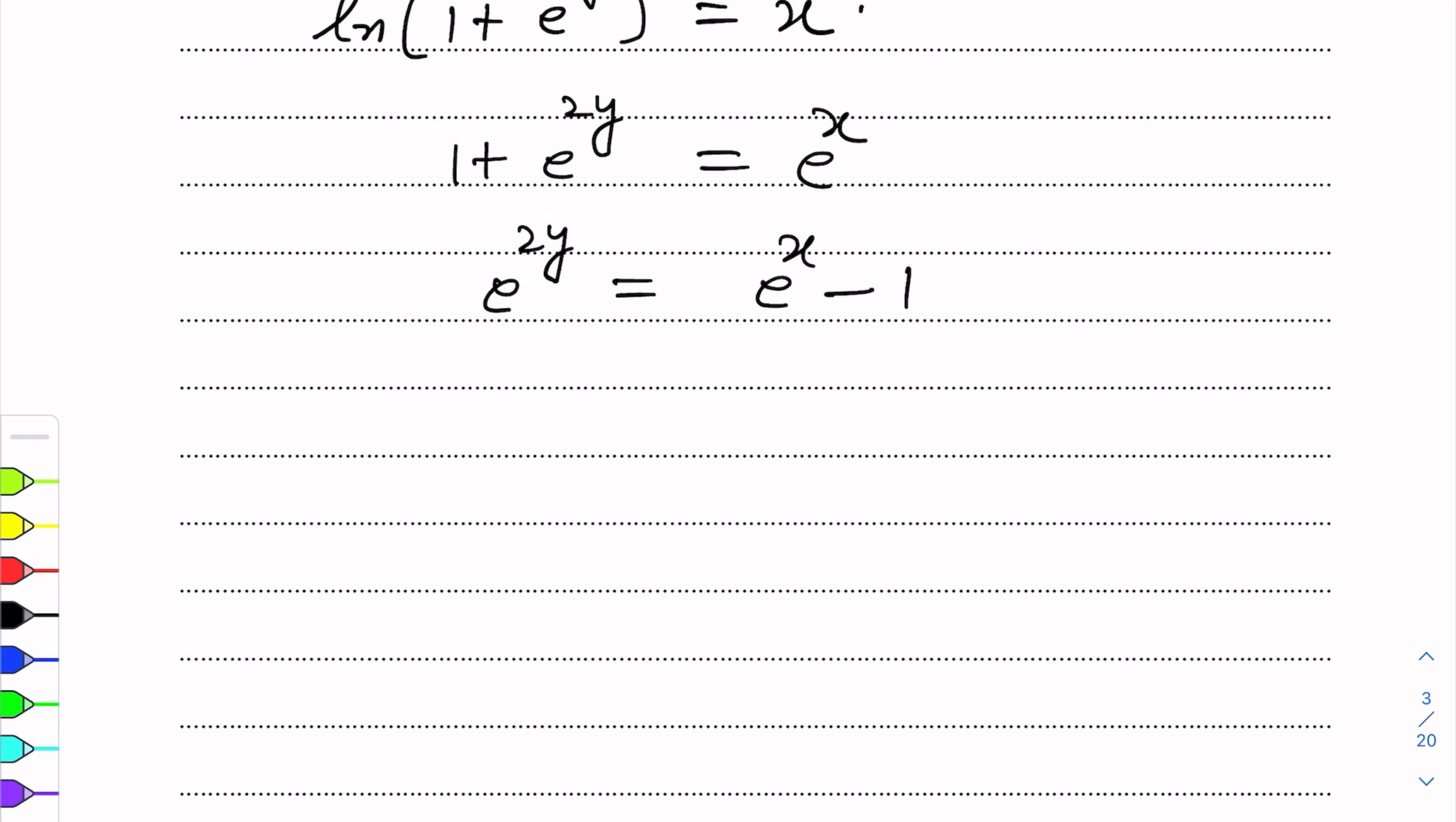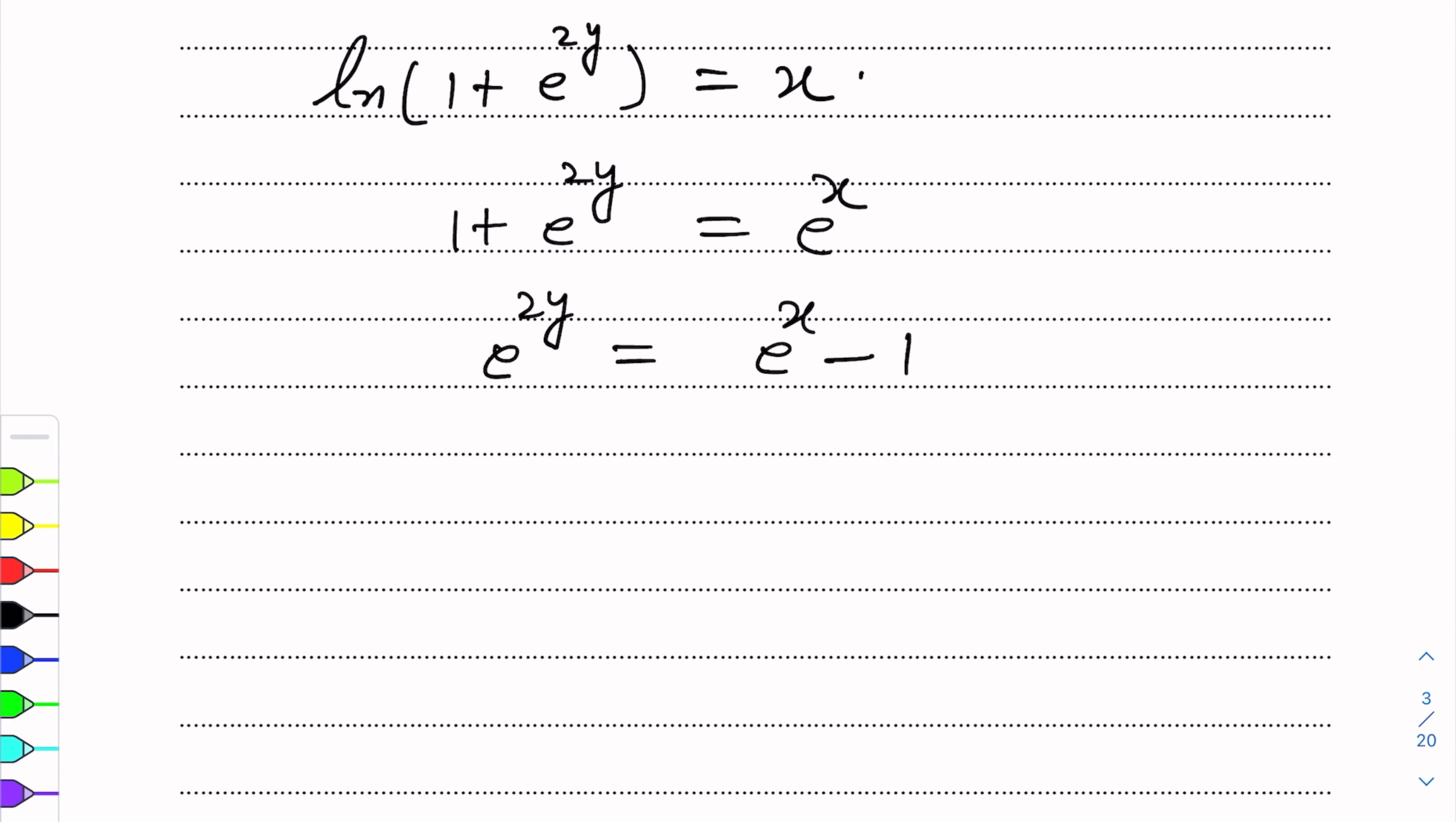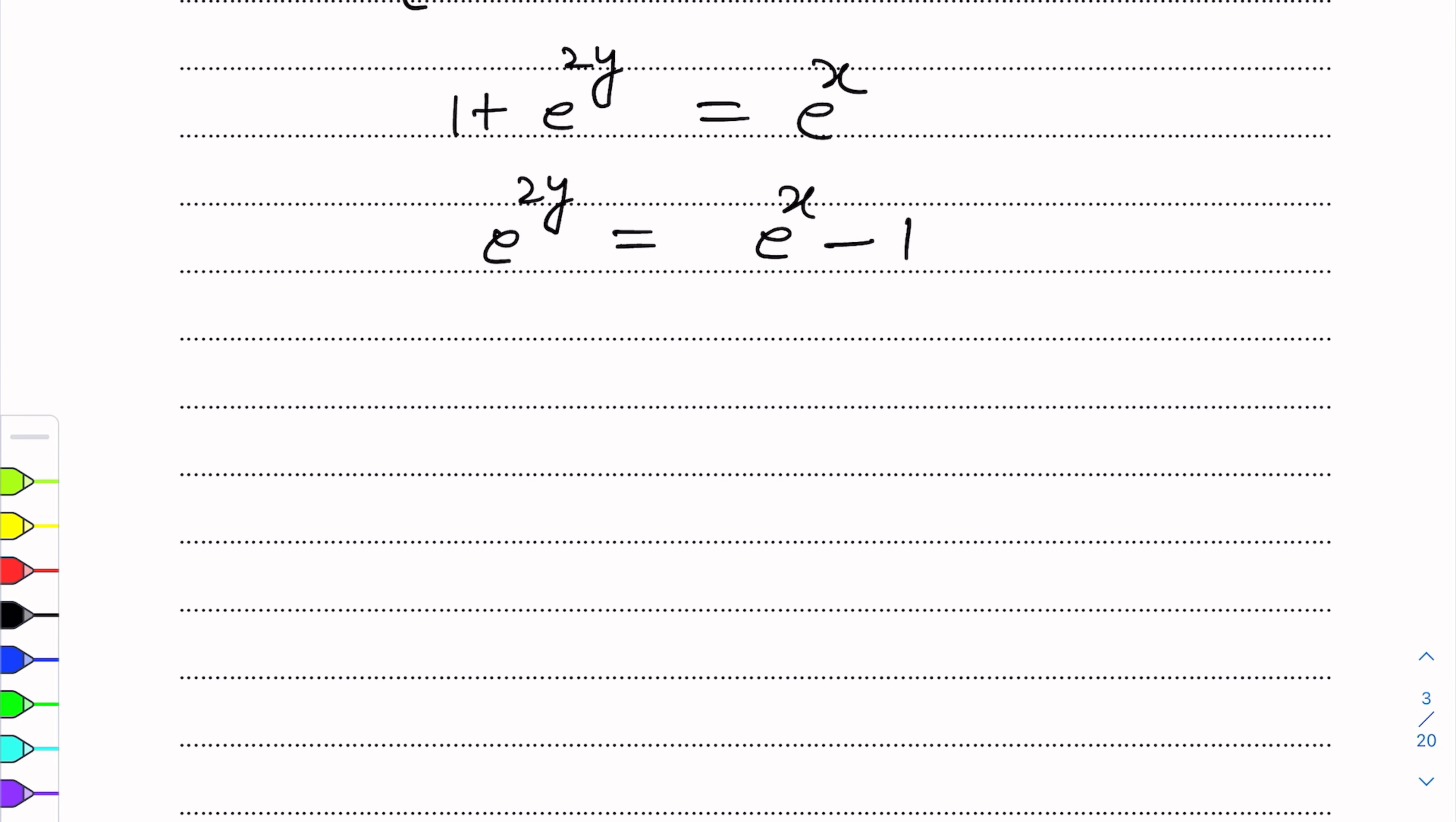So we will take log each side. This becomes 2y log e = log(e^x - 1).